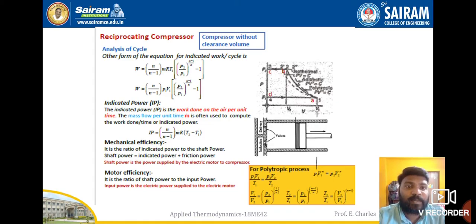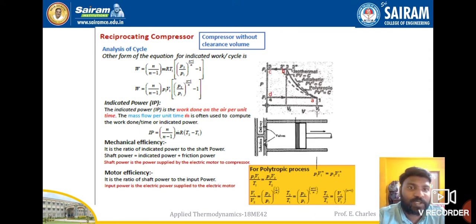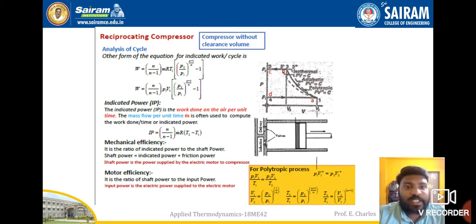In reciprocating compressors, indicated power will be less, whereas in IC engines indicated power is more — that is the key difference. Shaft power or brake power equals indicated power plus friction power. The shaft power is the power supplied by the electric motor to the compressor. Motor efficiency is the ratio of shaft power to input power, i.e., brake power divided by electric input power supplied to the electric motor.